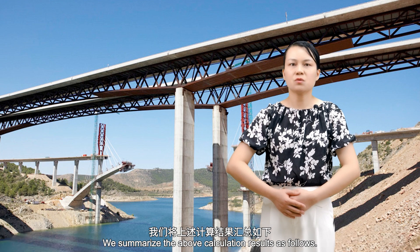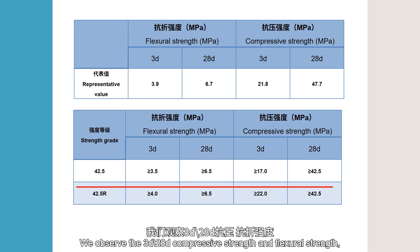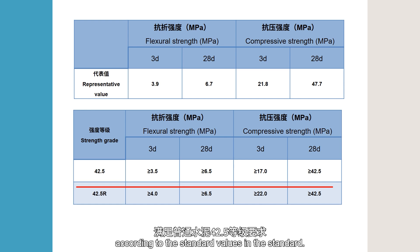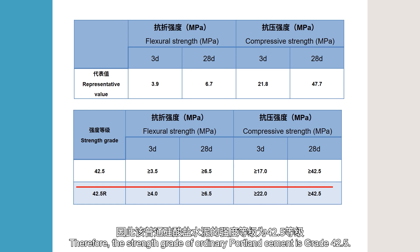Summarizing the above calculation results: the 3-day and 28-day compressive strength and flexural strength all meet the requirements of grade 42.5 ordinary cement according to the standard values. Therefore, the strength grade of this ordinary Portland cement is grade 42.5.